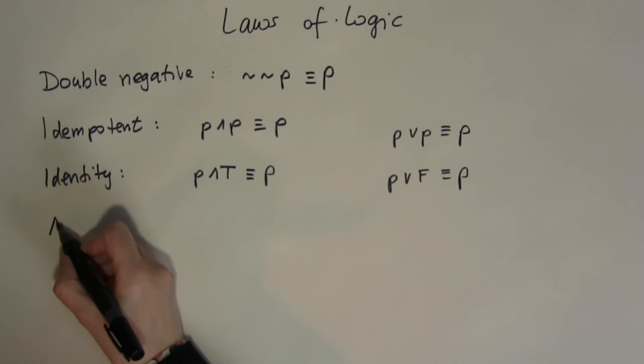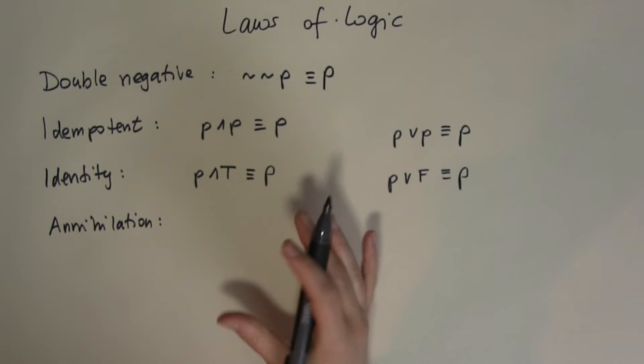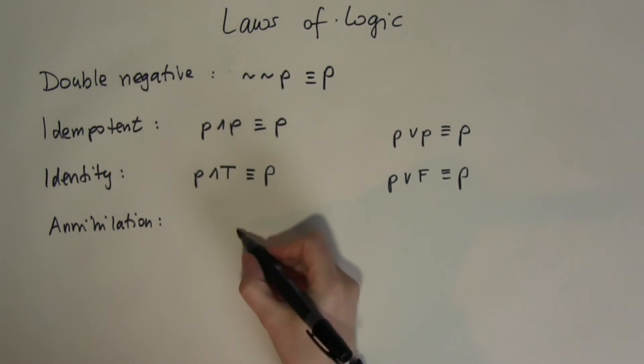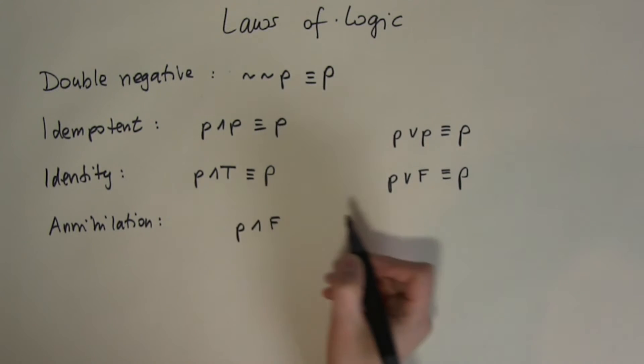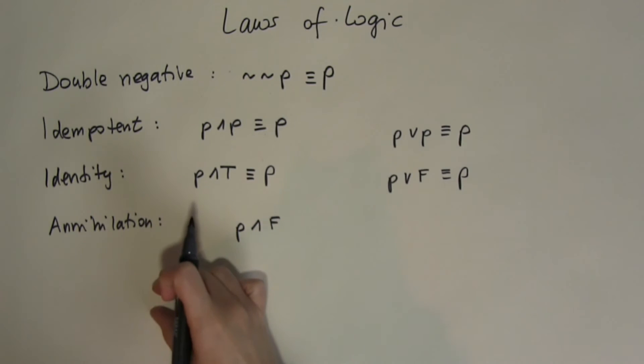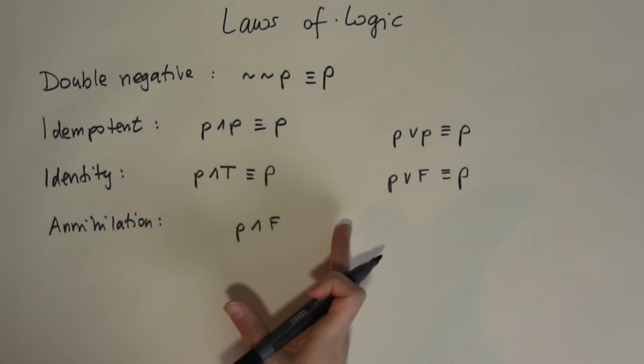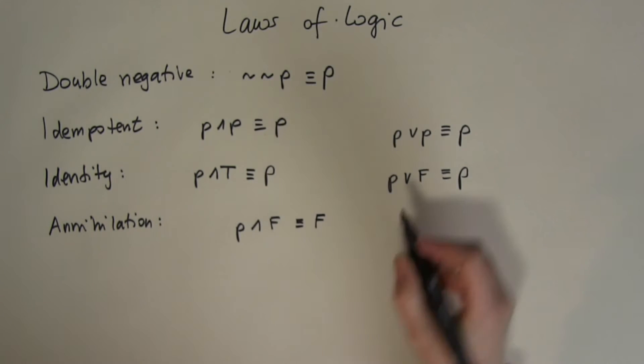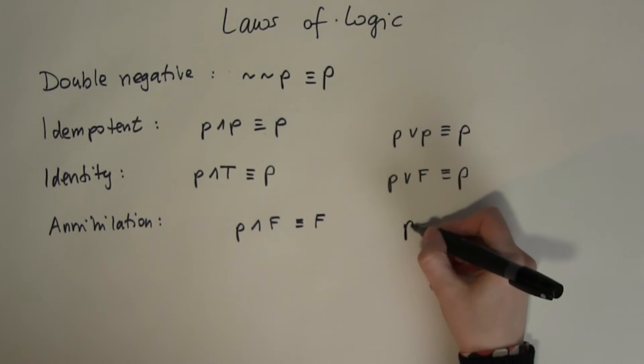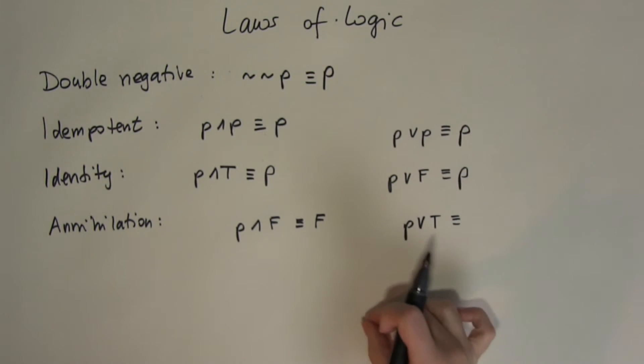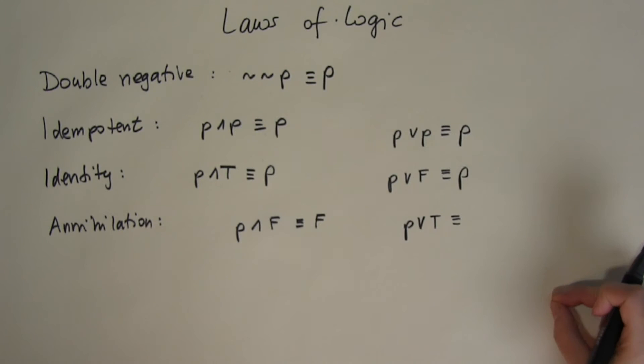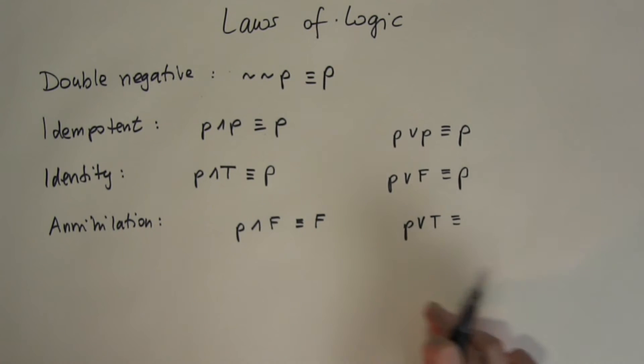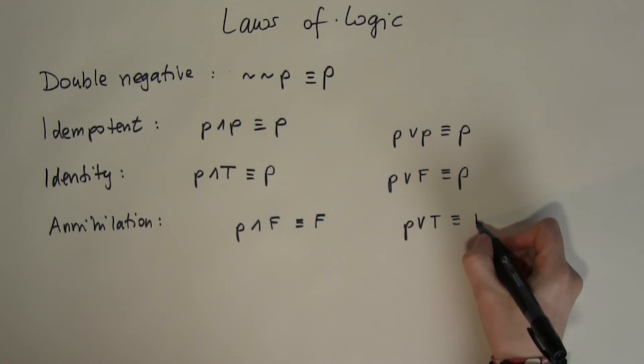The next law is the annihilation. The annihilation tells you when your input would annihilate, disappear. So if you have P and false, remember once you have false in the AND gate which was two taps on the same pipe, it doesn't matter if P is on or off, water won't go through. So this is always going to be false. And what happens if you have P or true? This is when you had two branches of the water and it doesn't matter if P is turned on or off, the water will always be able to flow through the other branch. So this is always going to be true.